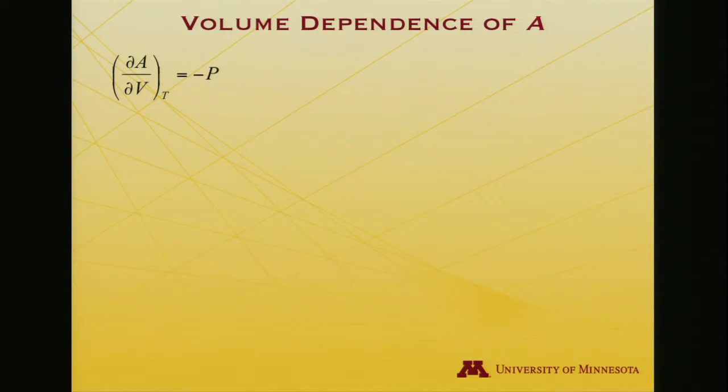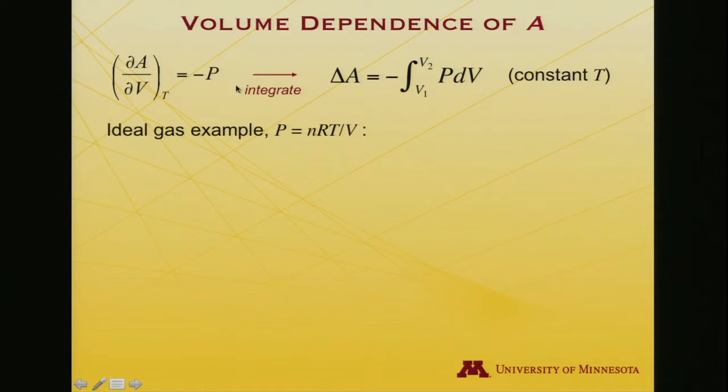All right, maybe the last one to look at, again, something for which we don't have a meter. Let's look at the volume dependence of the Helmholtz free energy. And so I have this relationship between minus the pressure and the derivative of the Helmholtz free energy with respect to the volume at constant temperature. So if I were to integrate this, move the dV over to the other side, I'll get that delta A is equal to minus integral from V1 to V2, PdV.